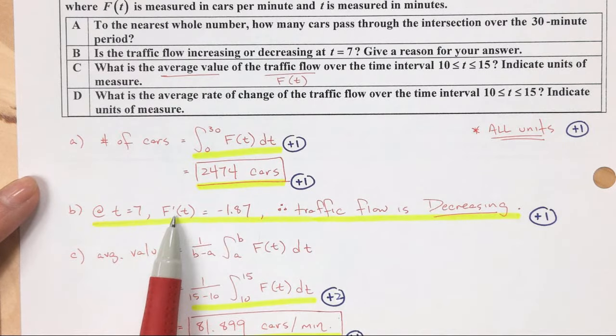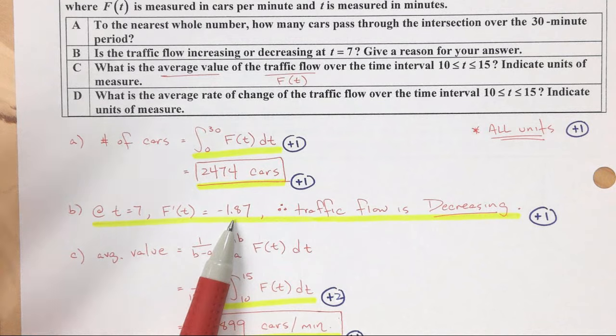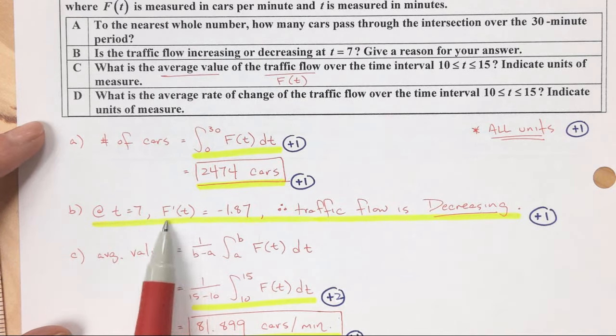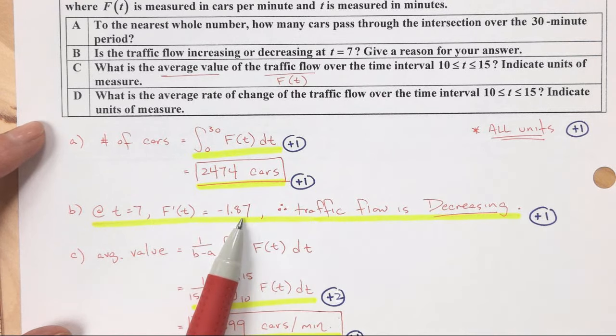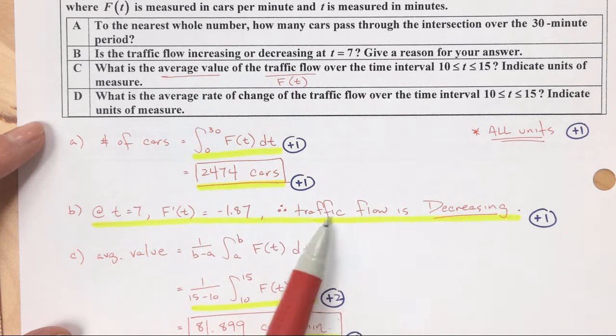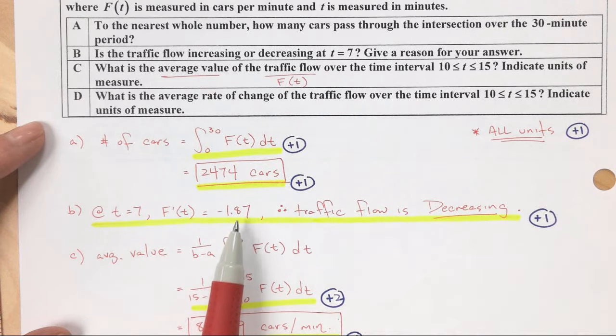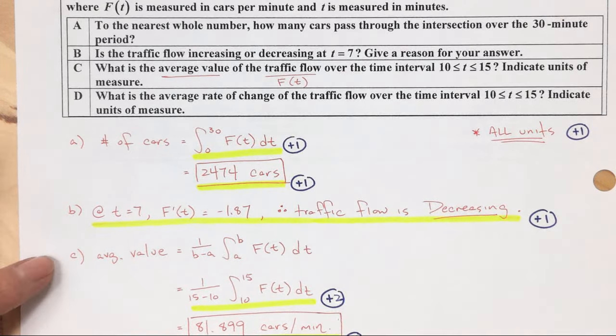So I find the derivative of f, and when I plug that into my calculator, I use like math 8 and just plug it right in. I get a negative number. So at t equals 7, the derivative of f, I can't just say the derivative. I have to say f prime of t equals, and I say what it is, therefore the traffic flow is decreasing. So that's a negative slope. So all of that for your answer for B.